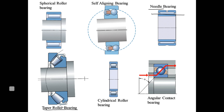Taper roller bearing has a rolling element with a taper shape — that is the taper roller bearing. In needle bearing, the length is comparatively large, which looks like a needle — hence the name needle bearing. In self-aligning bearings, the outer race is a common spherical path while the inner race has grooves. Cylindrical roller bearing is simple — the rolling element is a complete straight cylinder, hence the name cylindrical roller.